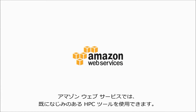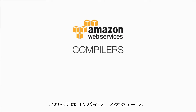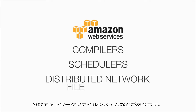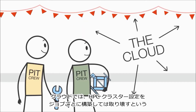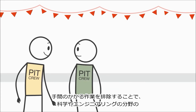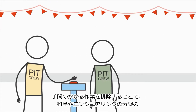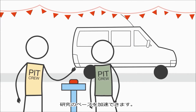With Amazon Web Services, you can use the HPC tools that you're already familiar with, such as compilers, schedulers, and distributed network file systems. In the cloud, you can increase the pace of scientific and engineering research by removing the heavy lifting of building and tearing down HPC cluster configurations in between jobs.